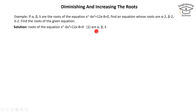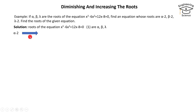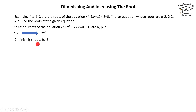The roots of equation 1 are alpha, beta, and lambda. Since the new root is alpha minus 2, we have alpha equal to 2. To diminish the roots by 2, we have to divide the equation by 2.